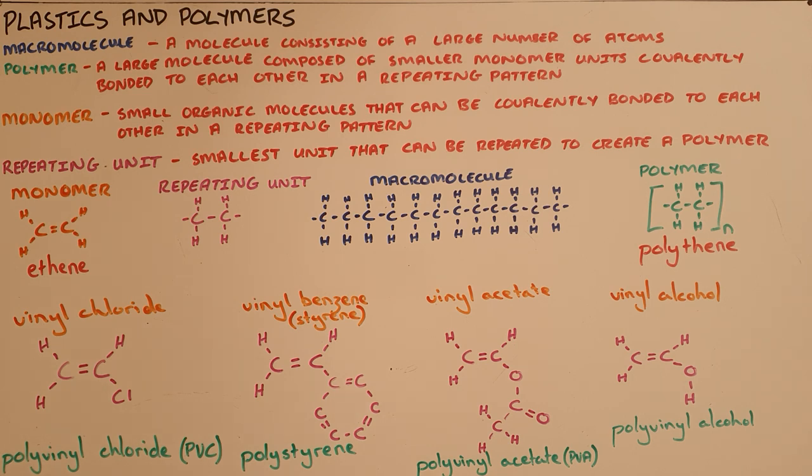Specifically, a polymer is a large molecule composed of smaller monomer units that are covalently bonded to each other in a repeating pattern, where a monomer is a small organic molecule that can be covalently bonded to another in a repeating pattern, and a repeating unit is the smallest unit that can be repeated to create a polymer.